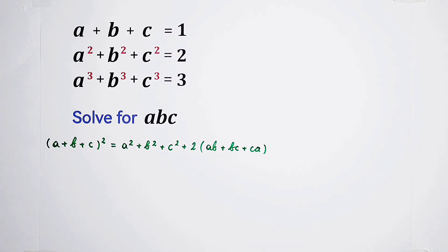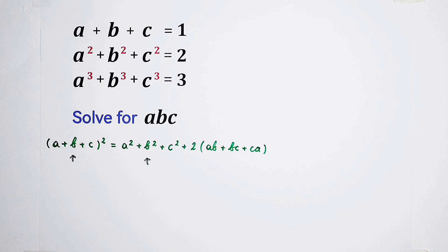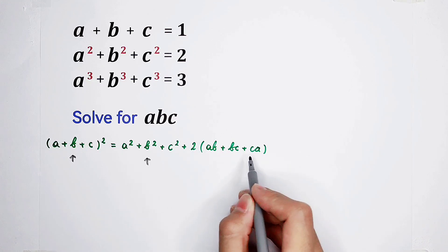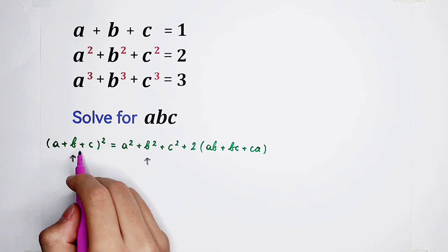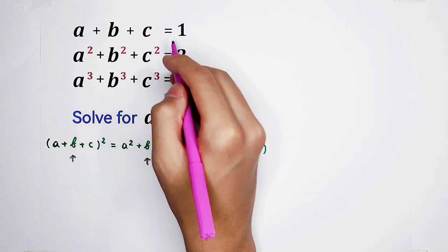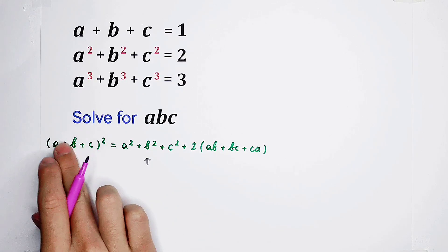You can find out that the sum of a, b, and c is given. The sum of a squared, b squared, and c squared is given. So, we can evaluate this part, this section: a plus b plus c squared. A plus b plus c, the sum of a, b, and c is 1. So, substitute it into this equation.